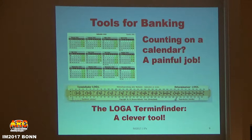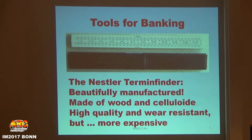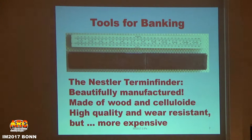But I found an even better solution. This one. Who knows this? I suppose many of you know this. This is a Nestler Termin Finder. Beautifully manufactured, made of wood and celluloid. Wear-resistant, high-quality scales. I'm proud of this — I found it for about 8 francs in a flea market, or in a brocante. And I did a lot of research, and Jürgen Nestler and also Hans Peter Schaub told me that they didn't know this kind of Nestler slide rule.